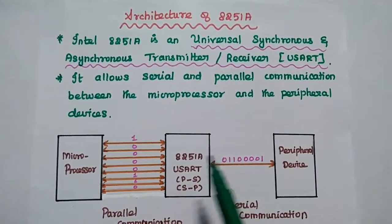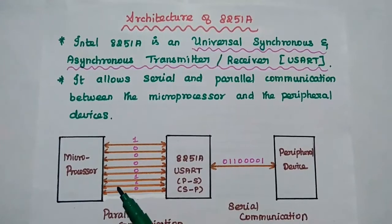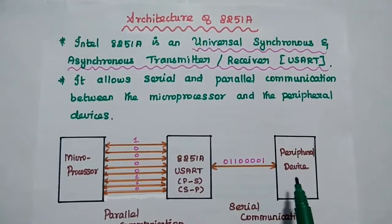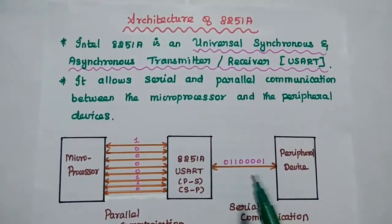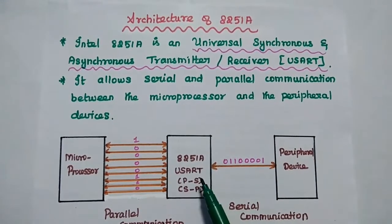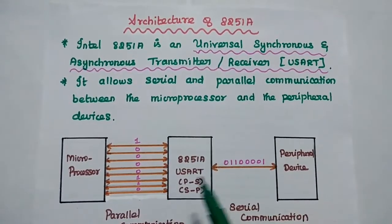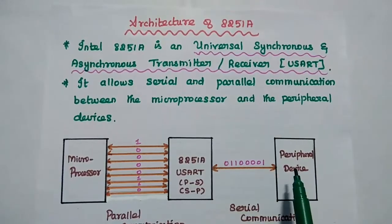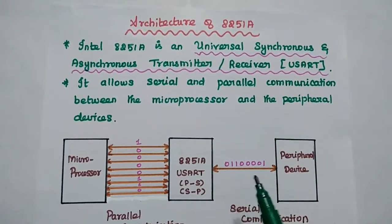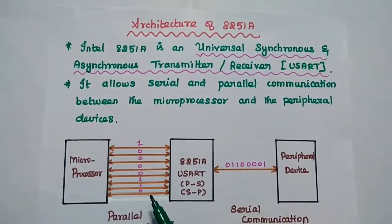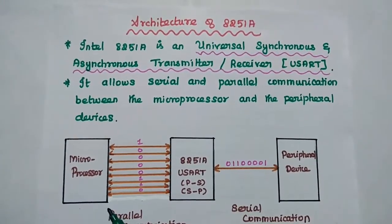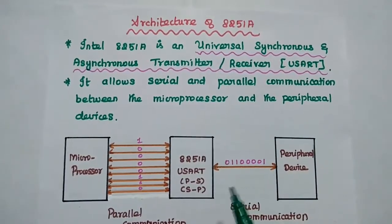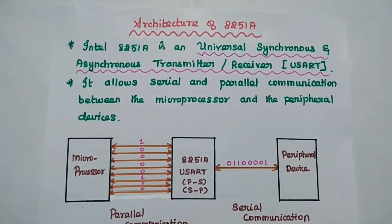Here in the diagrammatic representation, the microprocessor can only allow parallel communication, while the peripheral device allows only serial communication. So the USART is used to convert parallel bits into serial bits for communication from the microprocessor to the peripheral, and similarly, serial bits are converted into parallel bits for communication back to the microprocessor. It supports both serial and parallel communication.